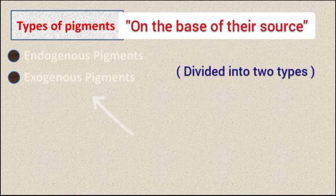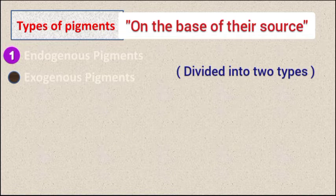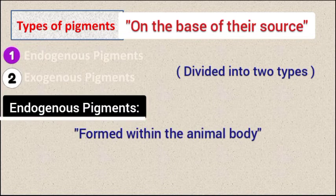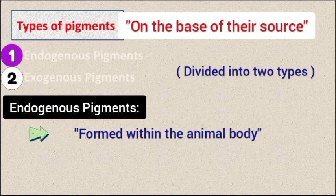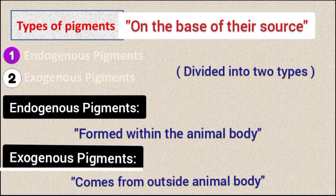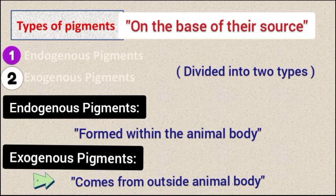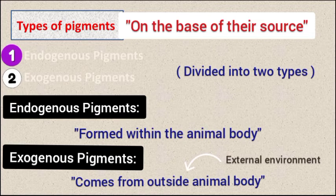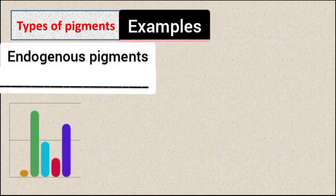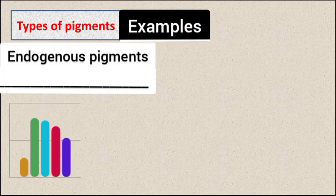On the basis of their source, pigments are of two types: endogenous pigments and exogenous pigments. Endogenous pigments are formed within the animal body, while exogenous pigments come from outside the animal body, from the external environment.